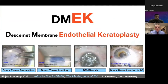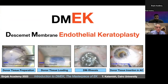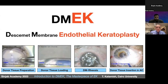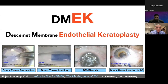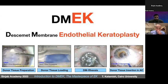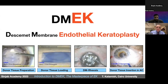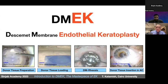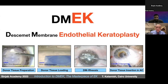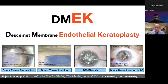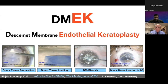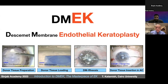DMEK — Descemet Membrane Endothelial Keratoplasty — has four main steps: donor tissue preparation by stripping the membrane from the donor cornea; loading the DMEK graft into a glass pipette; preparing the patient's eye by removing the diseased endothelial cells (descemetorhexis); and then injecting the new healthy DMEK tissue, making orientation, unfolding, and fixing it to the stroma with an air or gas bubble.